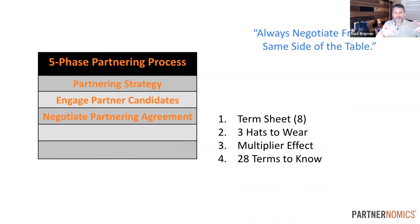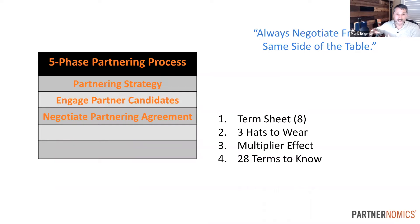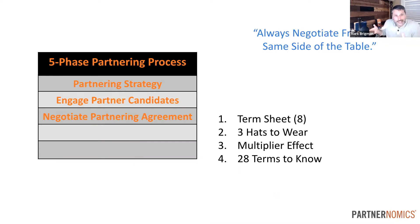Literally the term sheet should be used to turn around and dump into a contract. When the first version of the contract comes out, there really shouldn't be any surprises. A lot of deals are killed here because people don't handle this critically important process well.